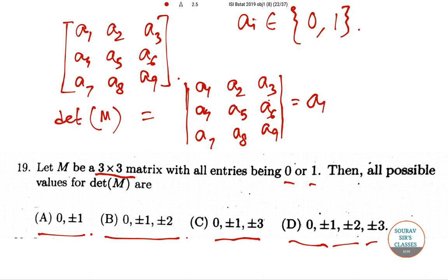By the first row we get: a1 into (a5·a9 minus a6·a8), minus a2 into (a4·a9 minus a6·a7), and so on.